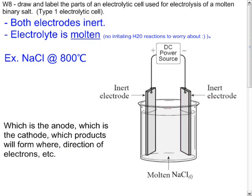Now, another type of electrolytic cell is known as a type 1 electrolytic cell. This one is a little easier in that there is no irritating water reactions to worry about, in that the electrolyte is usually molten, and it's a molten binary salt. So it'll take place, for example, sodium chloride at 800 degrees Celsius. There's no other species in molten NaCl other than Na plus and Cl minus. Well, this reduces the number of possible reactions dramatically.